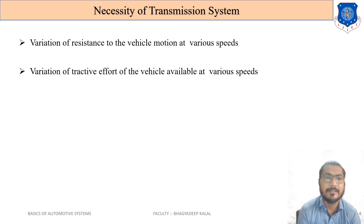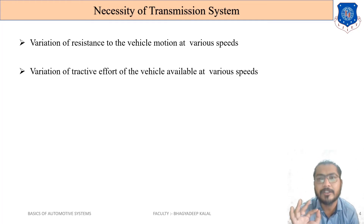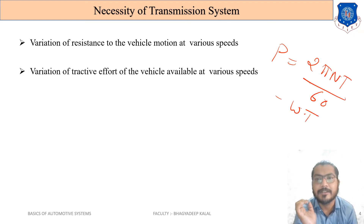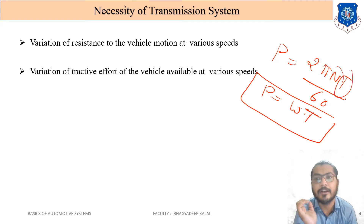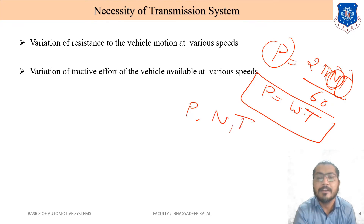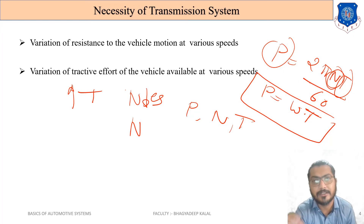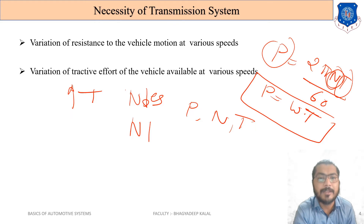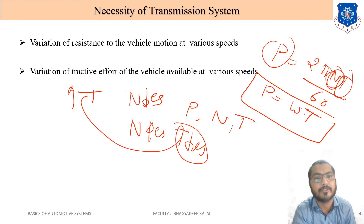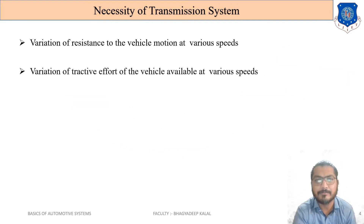Another necessity is the variation of tractive effort available at various speeds. The key formula is: Power = 2π × N × T / 60, or Power = ω × T. Here T is torque, N is RPM, and P is power. The transmission system works on the relationship between power, RPM, and torque: if RPM increases, torque decreases, and if torque increases, power increases.